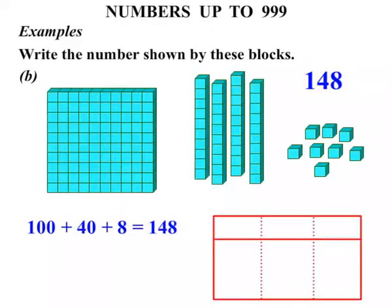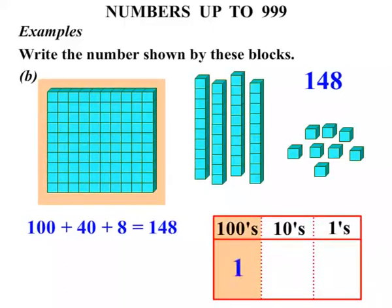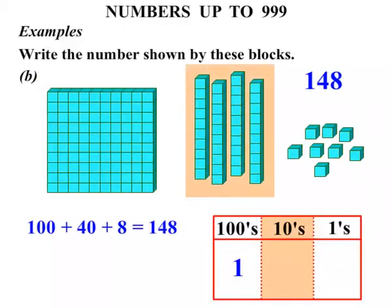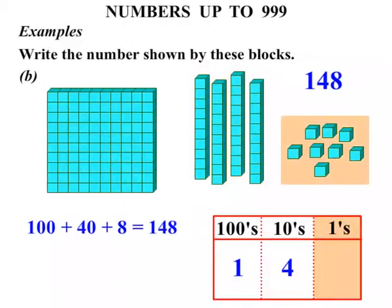And again, let's consider using the table. The right hand column is ones, then tens, then hundreds. Firstly hundreds. How many did we have? We just had one of those. How many tens did we have? That's right, four. And how many ones? Do you remember? We had eight. So looking at those numbers - one, four, and eight - one hundred and forty-eight.